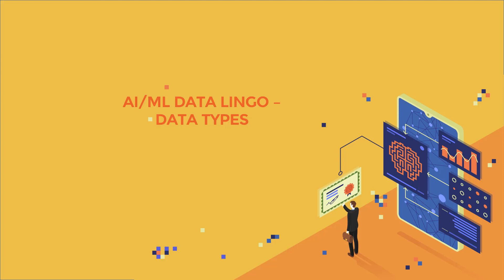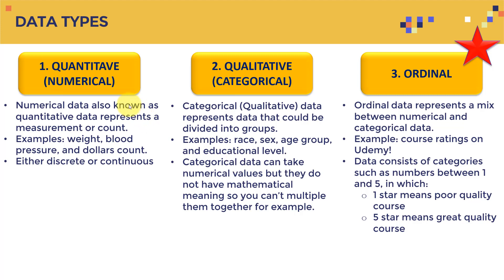Hello everyone and welcome to this new lecture. Let's keep going and cover AI ML data lingo part two, where we're going to cover data types. There are generally three data types — this is an important concept to understand and you might find it on the AWS machine learning certification exam. It might sound a little scary, but in essence it's actually very simple and pretty basic.